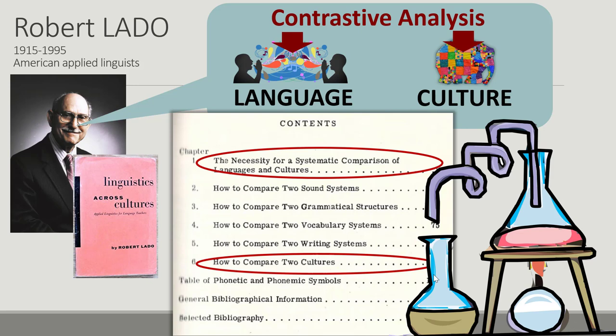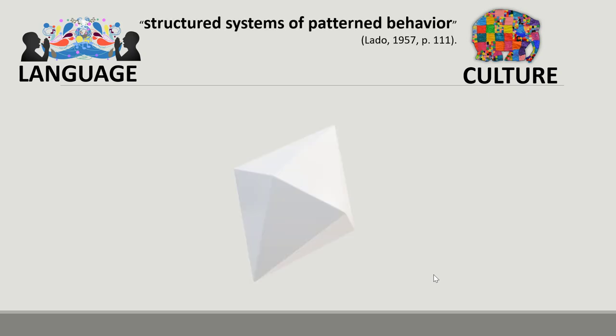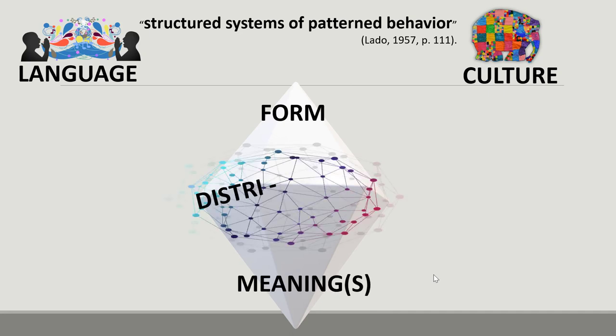According to Lado, to be able to compare two languages and cultures, the teacher must understand how these phenomena are organized. They are both organized as semiotic, symbolic systems — structuring systems of patterned behavior. Any linguistic unit and any cultural behavior or product has three interrelated dimensions: form, meaning, and distribution of forms and meanings. We can easily recognize here a linguistic terminology.